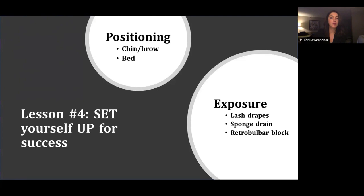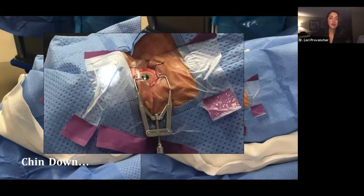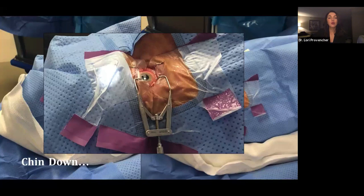So this is a picture taken of a patient who is draped really beautifully, great lash drapes. They've got the lid speculum in with the eye nice and wide open. But what you'll notice is if you zoom in, there's hardly any access to the superior limbus. So when you're doing FACO, you're often working with two hands, and you really need to be able to get your second instrument in there.